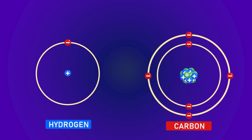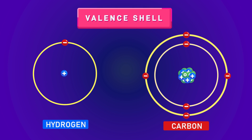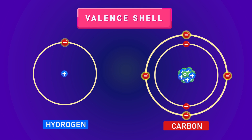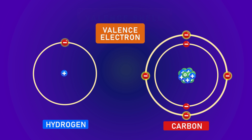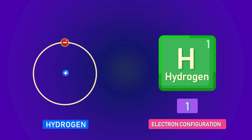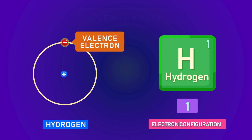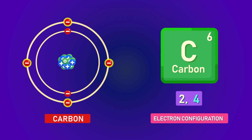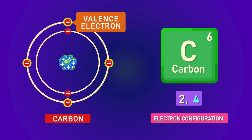What are valence electrons? The valence shell of an atom points to the outermost shell of an atom. The electrons in the outer shell of an atom are known as valence electrons, or outer electrons. For example, as hydrogen has only one electron, that electron will act as a valence electron. In the case of carbon, it has four electrons in its outer shell, so those four electrons will be called valence electrons.